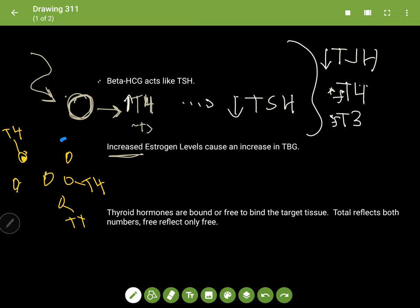And so there are two lab values that you have for your thyroid hormones: the free and the total. Free T4 reflects just the free T4. The total T4 is actually the free T4 plus the T4 that's bound to the globulin.